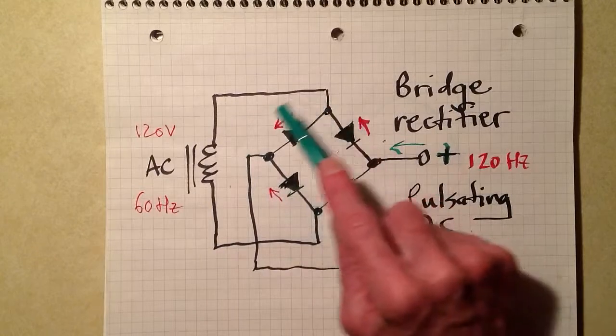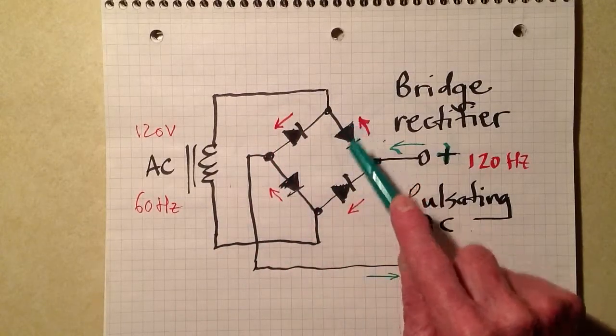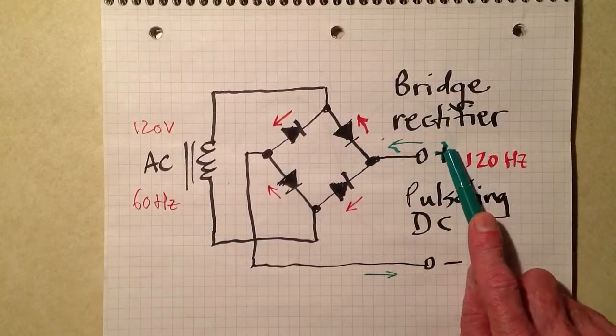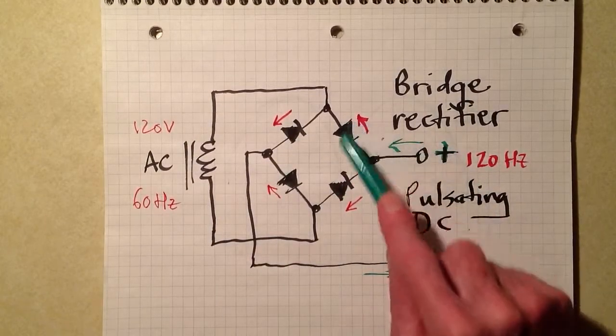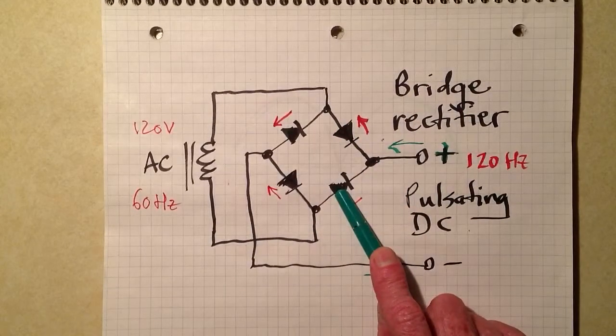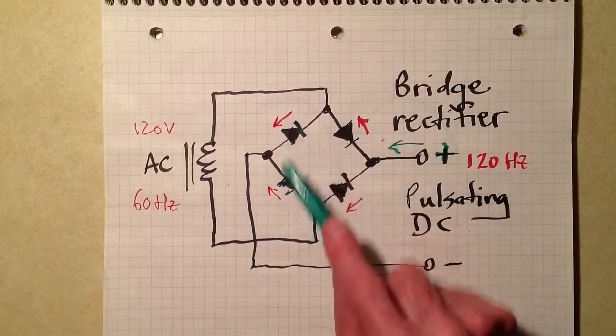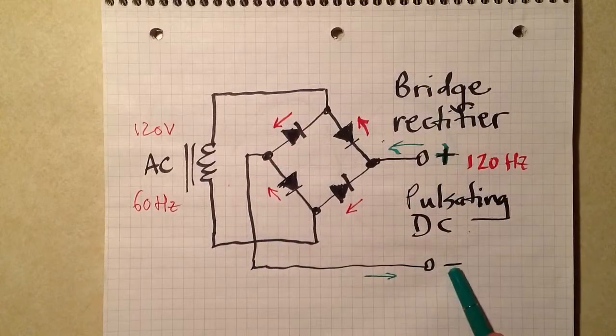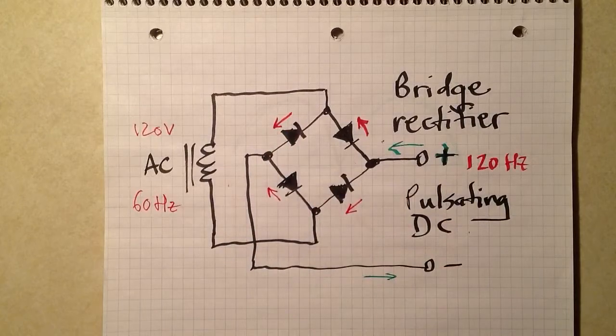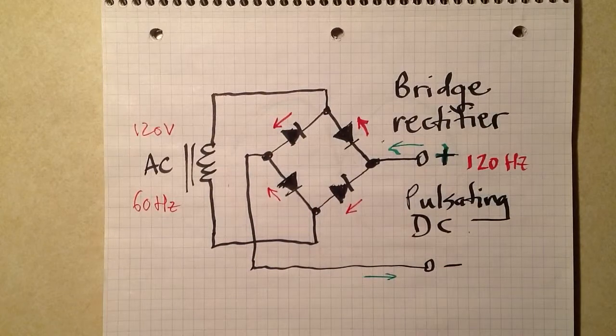So, that's why we have four diodes. These two diodes take care of the positive pole of the DC, one during one half of the cycle, and the other during the other half of the AC cycle. Similarly, these two diodes do the work for the negative pole, one of them during one half of the cycle, and the other one during the other half of the cycle.